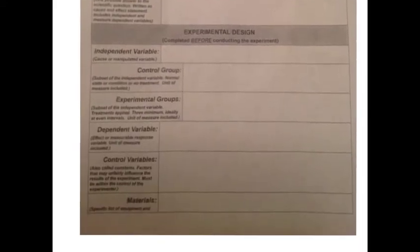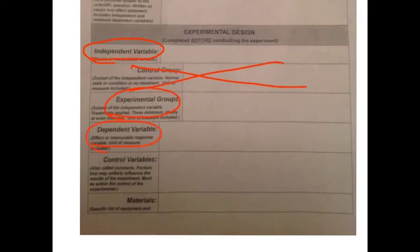Further down, I want you to come up with your independent variable. We won't have a control group, but you will have experimental groups and a dependent variable, and then control variables. Remember these things that are out of your control, so consider these out of control variables. And then materials. I want you to list your materials. Always list your materials.